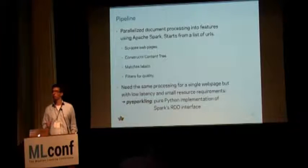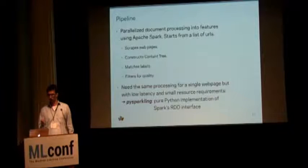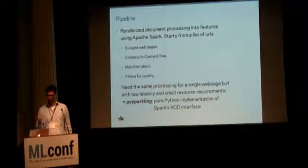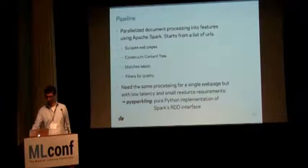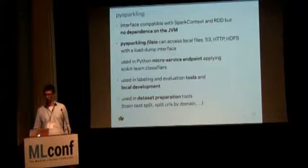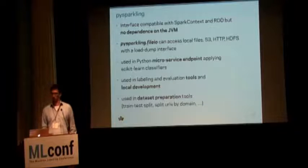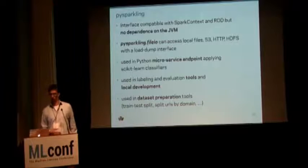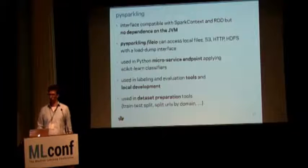We need the same processing pipeline used on our large training and test data sets to also run on the microservice endpoint that our platform talks to. So when a user requests a single page, a process kicks off and asks a microservice to return a result. That endpoint needs to do the exact same transformations on a document before it becomes a normalized feature set. So I wrote an interface-compatible version of Spark in pure Python — you get a Spark context and an RDD without the JVM. It's highly non-parallel but very fast, requires very little resources, and is applied to a single document.